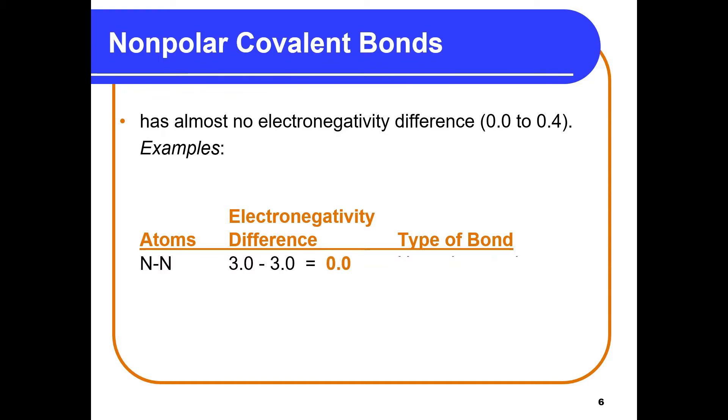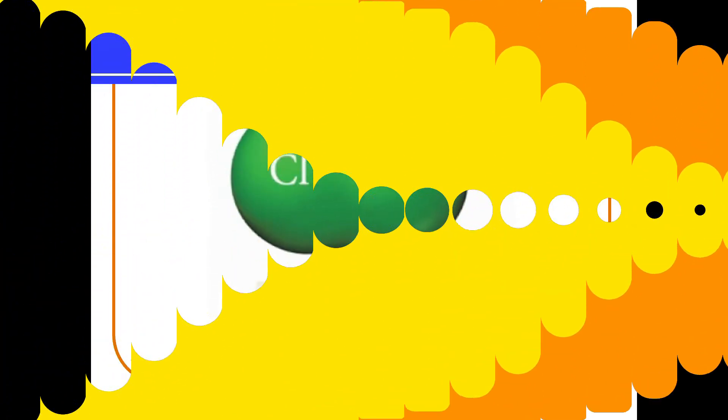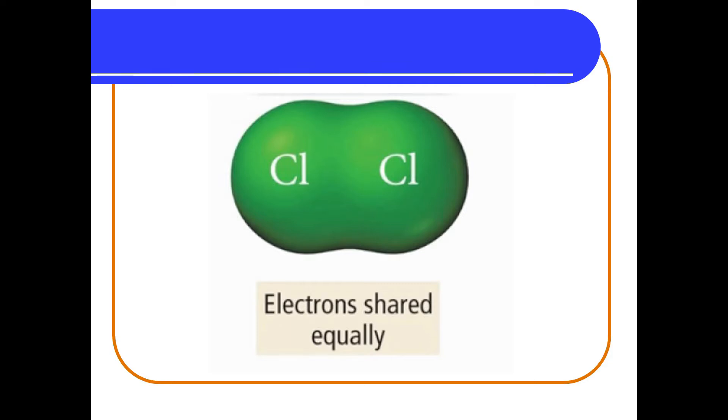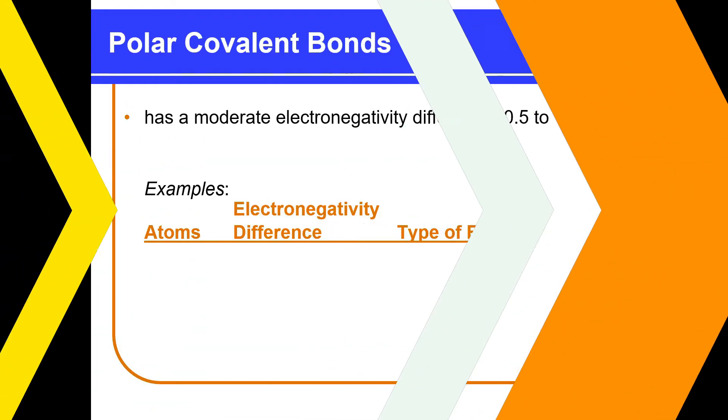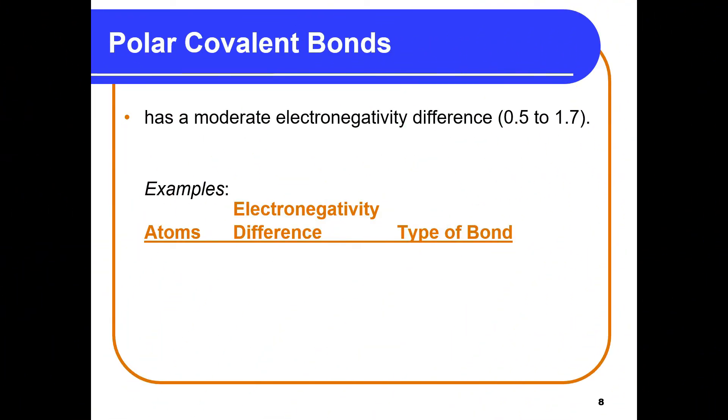Having a difference of 0 to 0.4 means you are a non-polar covalent bond. Examples are nitrogen bonded with nitrogen, chlorine bonded with chlorine, and hydrogen bonding with silicon. If we observe molecules with non-polar covalent bonding, the shape is symmetrical. It's because the electrons are equally shared among the atoms.